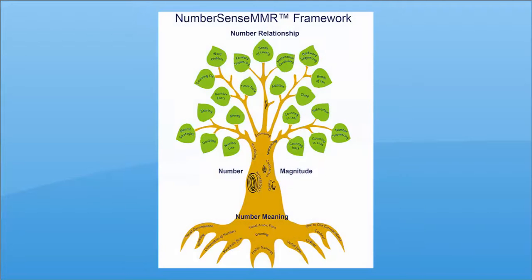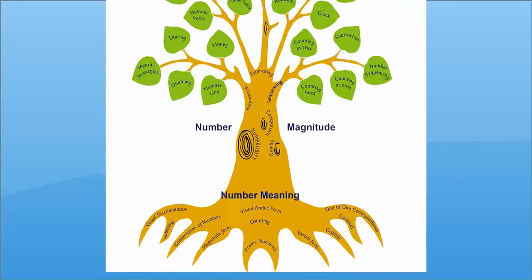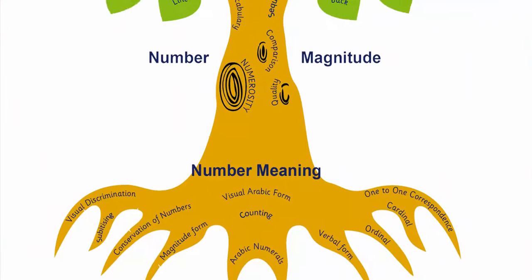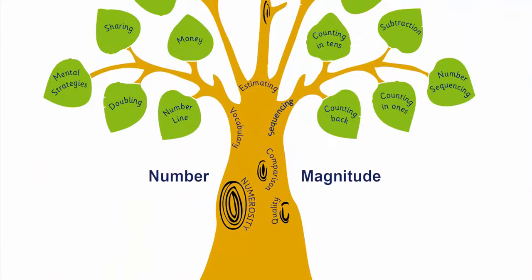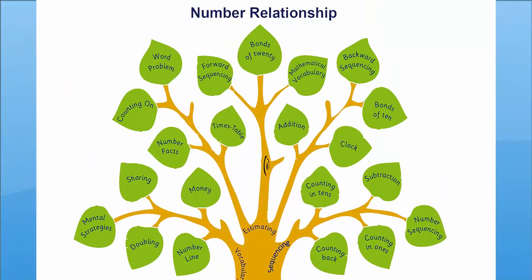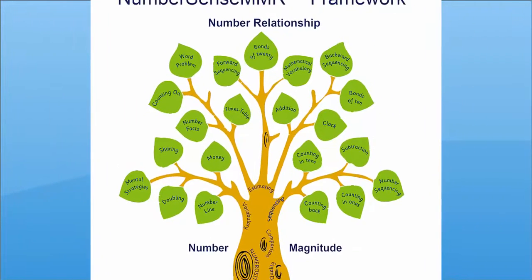The NumberSense MMR framework is split up into three developmental stages. These are Number Meaning, represented by the roots of a tree; Number Magnitude, represented here as the tree's trunk; and Number Relationship, represented here as branches and leaves.